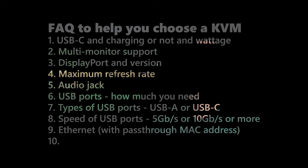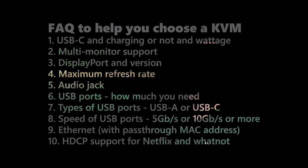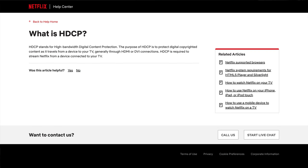I don't see home users needing the Ethernet MAC address pass-through feature, but maybe you're a high-level exec who needs this kind of security feature while working from home. Number ten: HDCP support. HDCP is technically DRM for your video streaming services like Netflix. If your monitor doesn't support HDCP, then you cannot watch Netflix in high resolution. HDCP is actually very important, so keep that in mind.